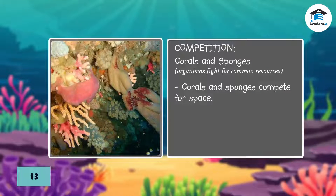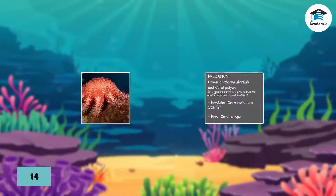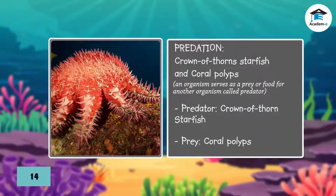Corals and sponges in a reef are in competition. They stay in one place and compete for space. An example of predation in coral reefs occurs between a crown of thorns starfish feeding on coral polyps. The predator is the starfish, and the prey is the coral polyps.